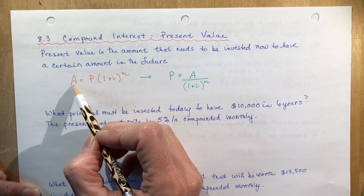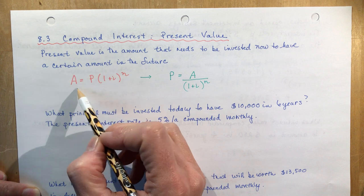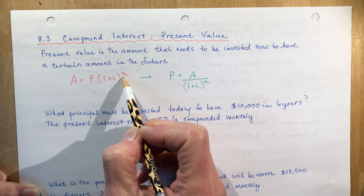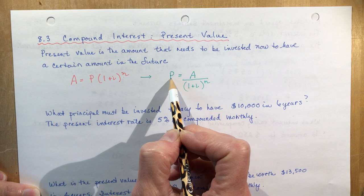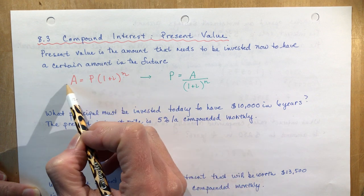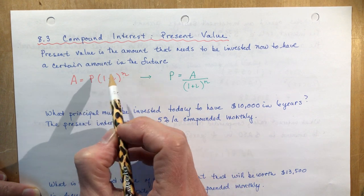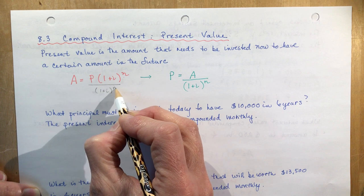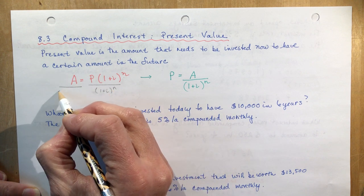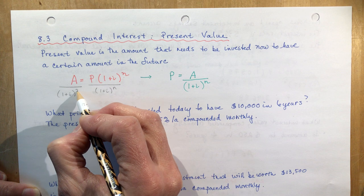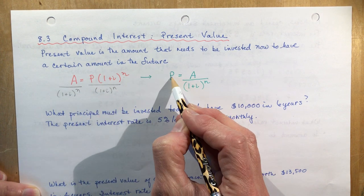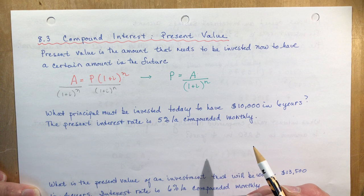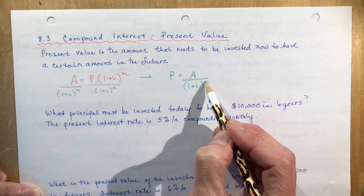All we're doing is taking our equation A equals P times (1 plus i) to the n and solving for P. Divide both sides by (1 plus i) to the n, and you end up with the present value formula. Now we can solve for the present value knowing the future value, the interest rate, and the number of payments — don't forget to match these together.